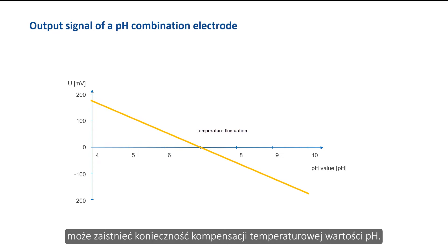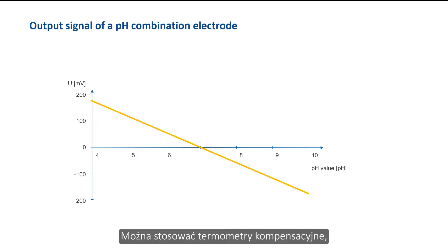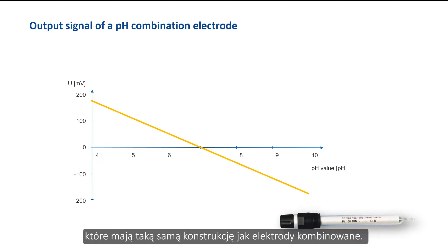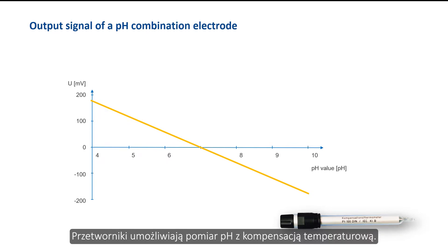To measure the temperature, the transmitters have an input for RTD temperature probes. Compensation thermometers can be used which have the same design as the combination electrodes. The transmitters enable temperature-compensated pH measurements.